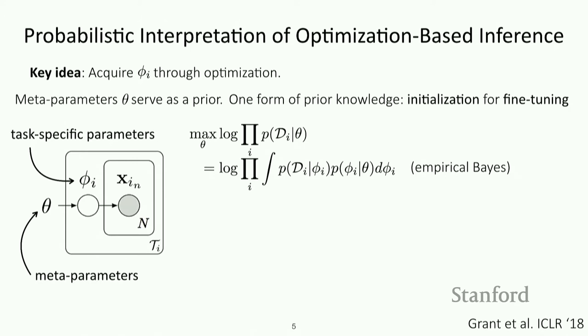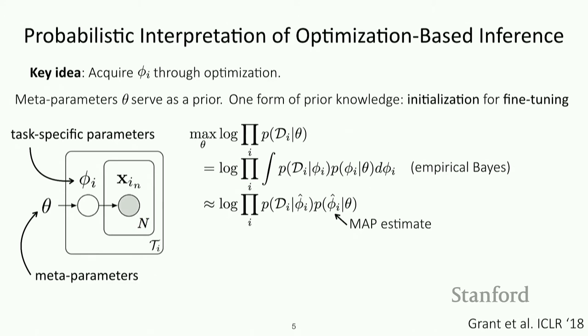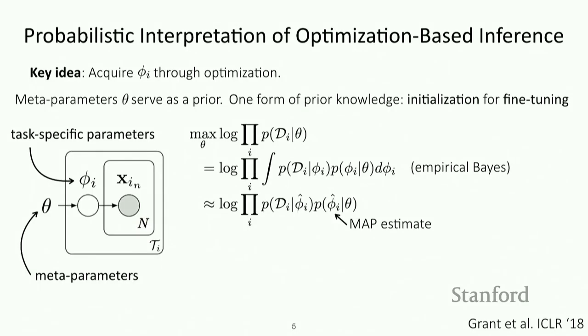This integral over all possible task-specific parameters is intractable, particularly when we have large numbers of parameters. So we can't perform this optimization in any exact way. What we can do is crudely approximate this integral with a point estimate for phi_i, which represents the maximum a posteriori (MAP) estimate of those parameters. The MAP estimate is a better choice than other choices because it has the maximum probability.